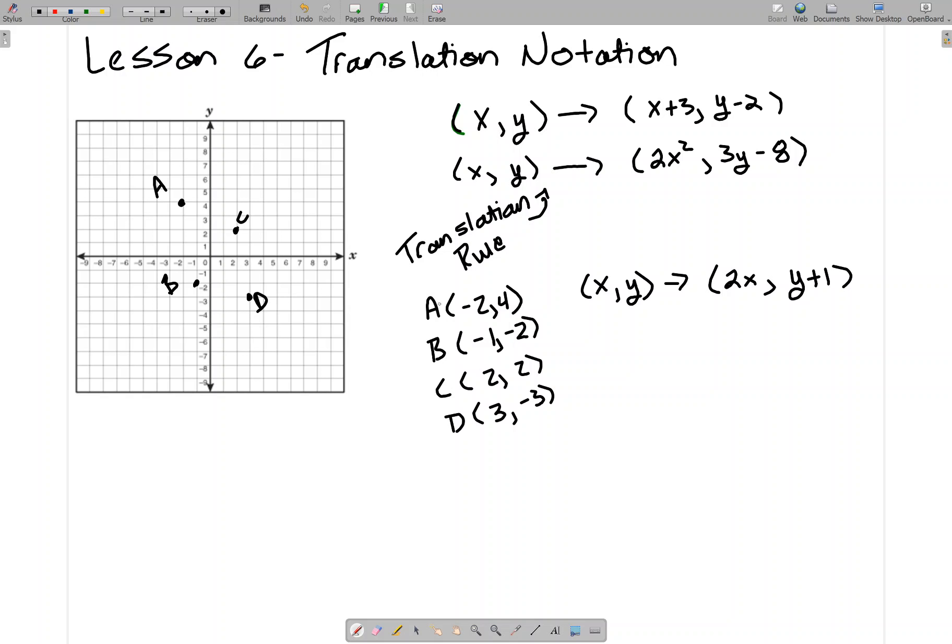The original points are called the pre-image. The new points are called the image. When I'm doing what A is going to change to, I'm going to mark it with a little apostrophe next to it. That is called prime notation. So A is the pre-image, A prime is the image. B prime is the image of B, meaning what happens after this translation. C prime is the image of C, and D prime is the image of D.